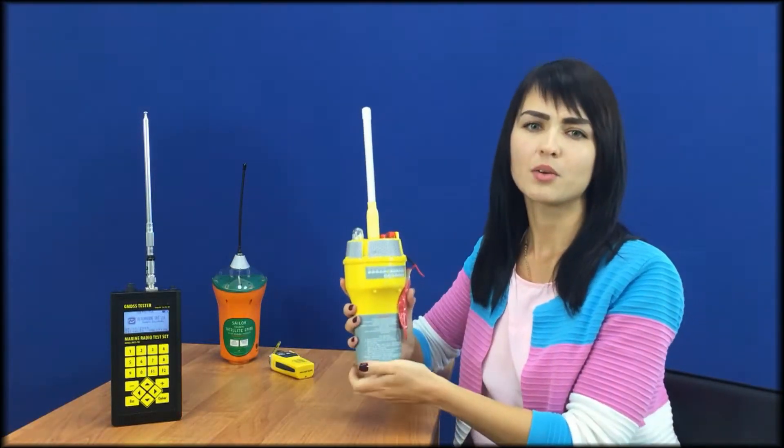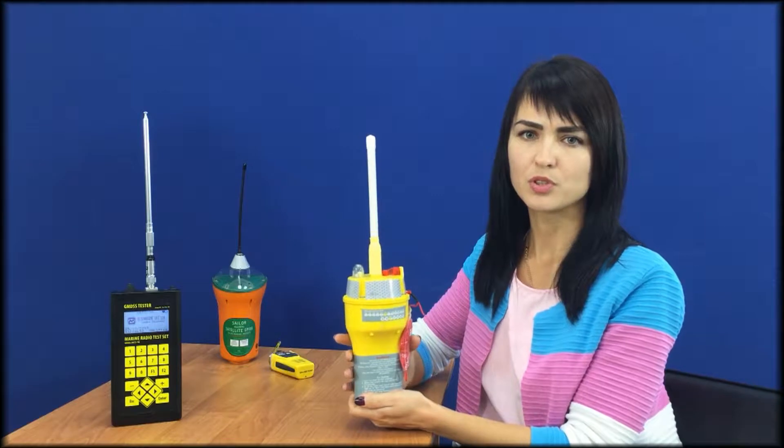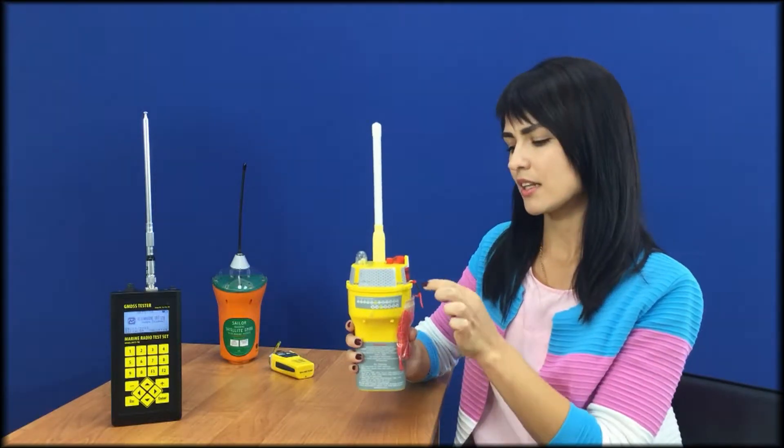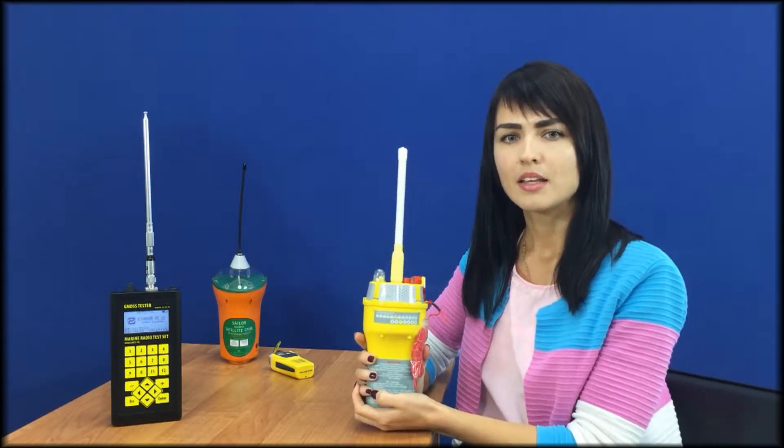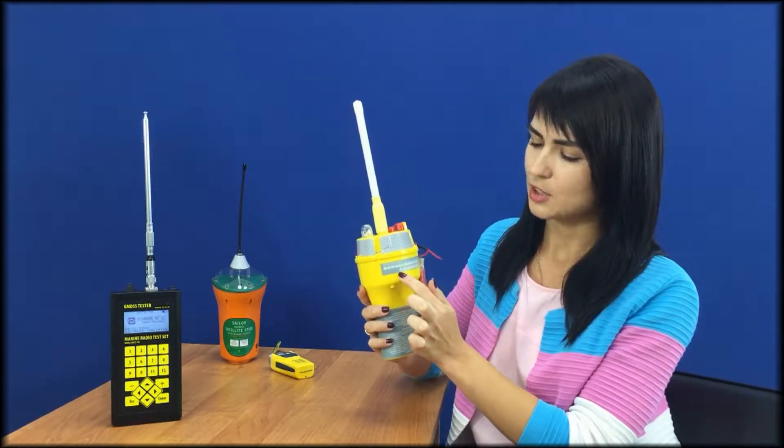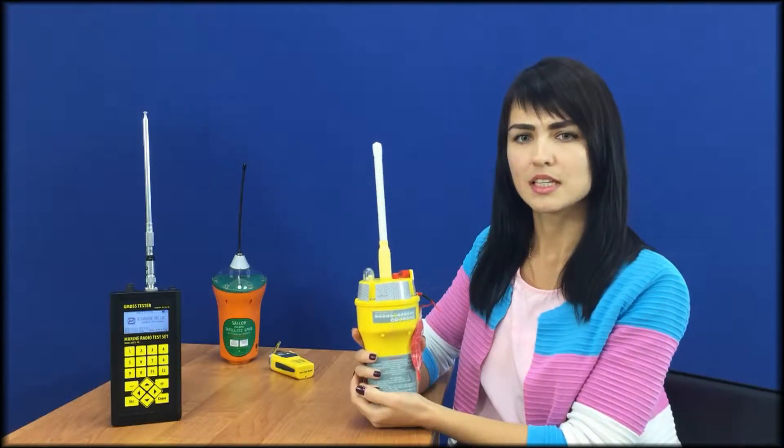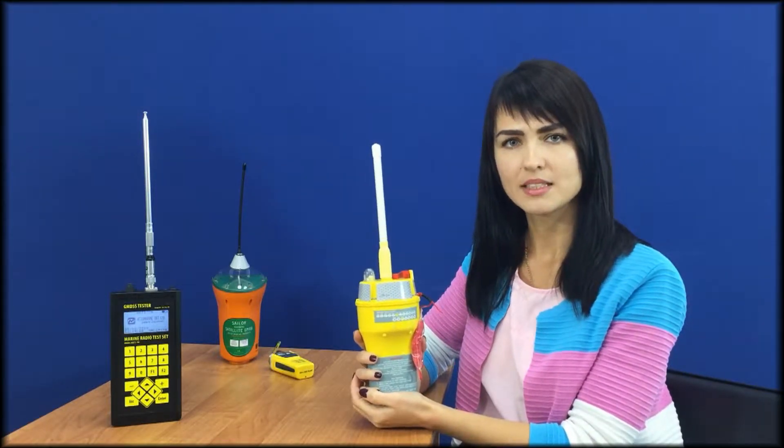First of all, we need to carry out the visual inspection of an E-PIRB to be sure that it has no damages. Check that the lanyard is firmly attached and not tied. Then check the battery's expiration date, hydrostatic release unit and replace if necessary.